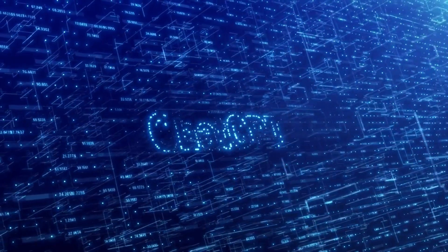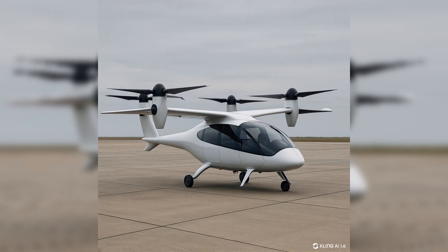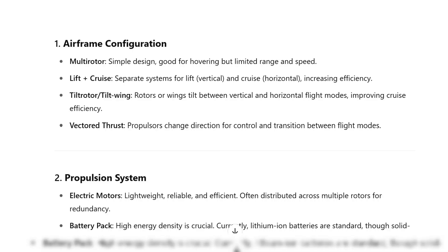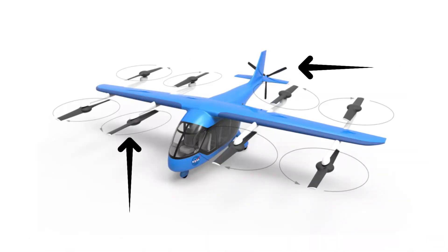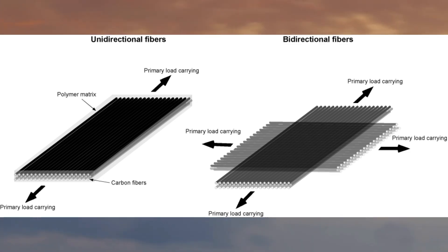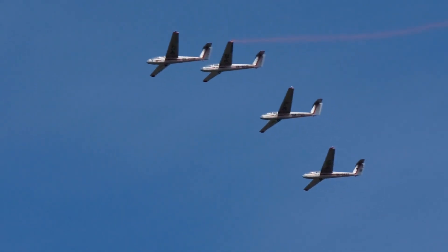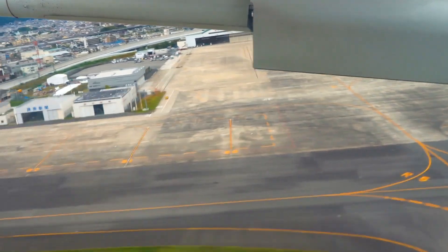First up, we have ChatGPT. When prompted to outline the features of an efficient eVTOL, ChatGPT suggested a lift-plus-cruise configuration, arguing that separating lift and cruise systems allows for optimized performance and improved safety. It recommended a fixed-wing airframe made from lightweight composite materials like carbon fiber reinforced polymer, high aspect ratio wings for better glide performance and energy efficiency, and aerodynamic drag reduction via a smooth, blended fuselage and retractable landing gear.